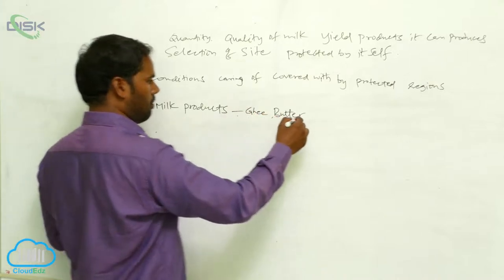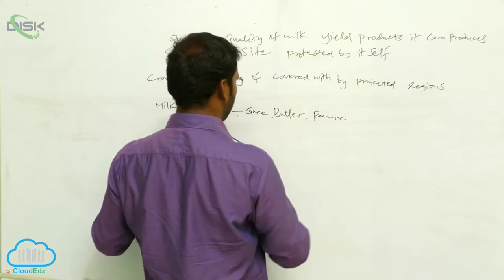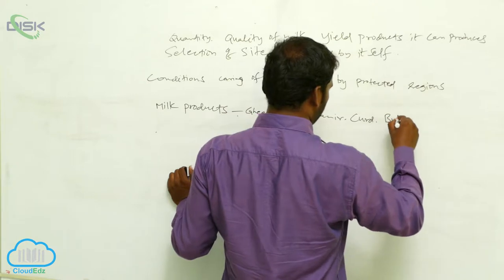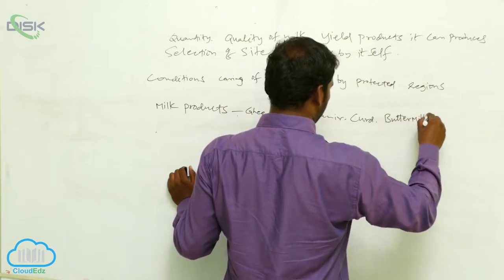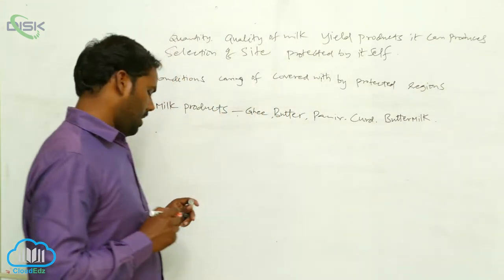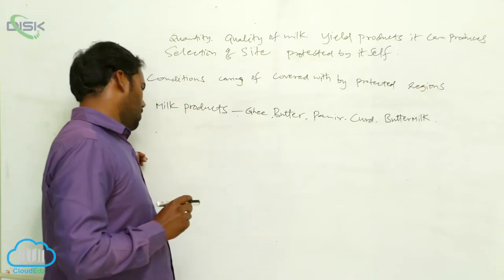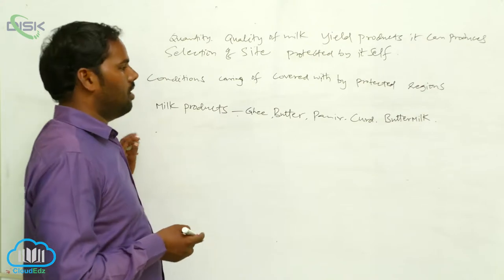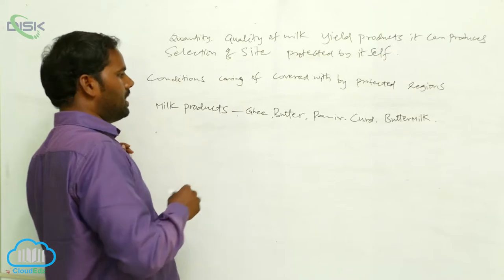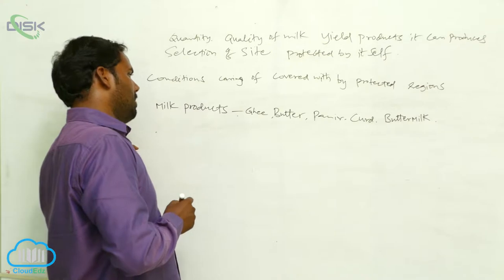Ghee, butter, paneer, curd, buttermilk — such products are highly marketed milk products. We can depend upon the cow, goat, buffalo, and sheep. These particular high-yield breeders can give us more milk, depending upon the breeders.